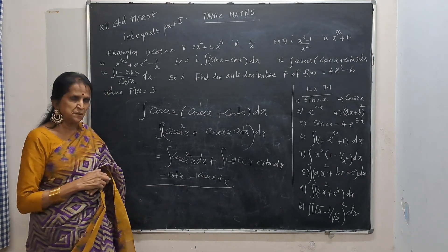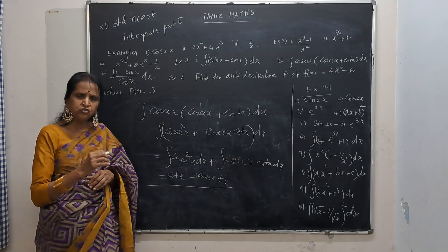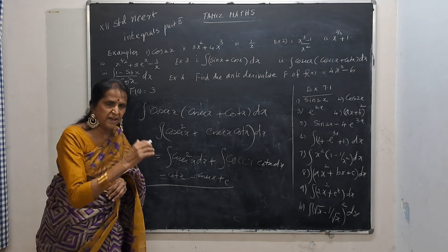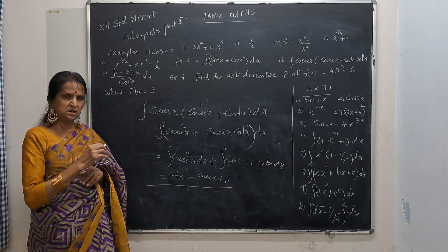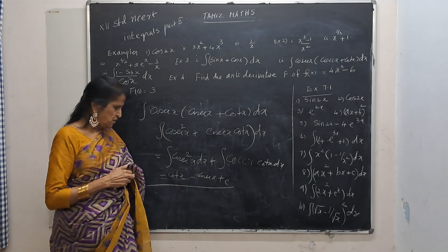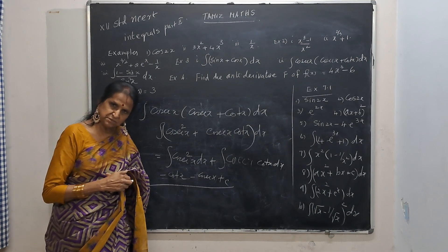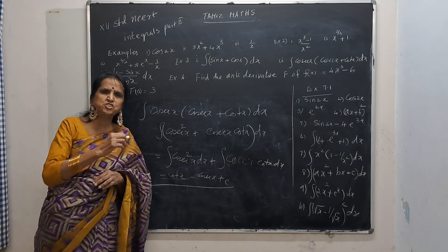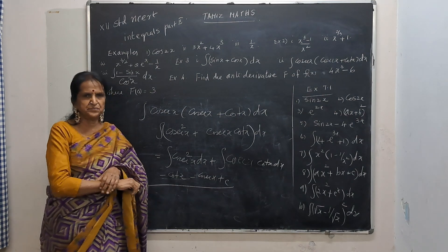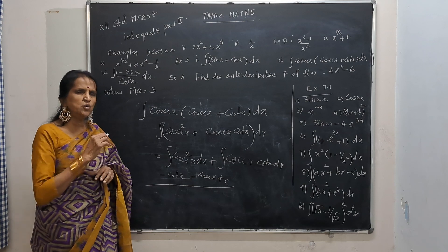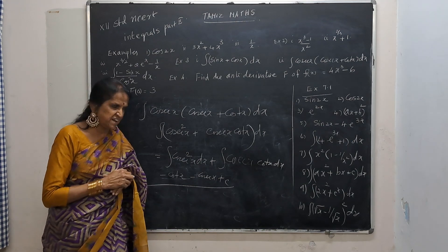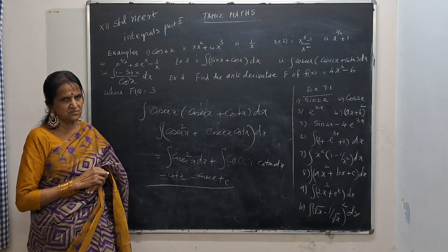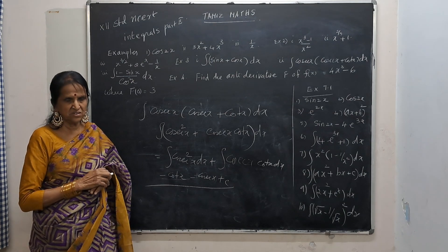Let's go for this — I will give you a new formula. What is the integral of cosecant squared x? It is minus cot x. What is the integral of cosecant x into cot x dx? It is minus cosecant x.